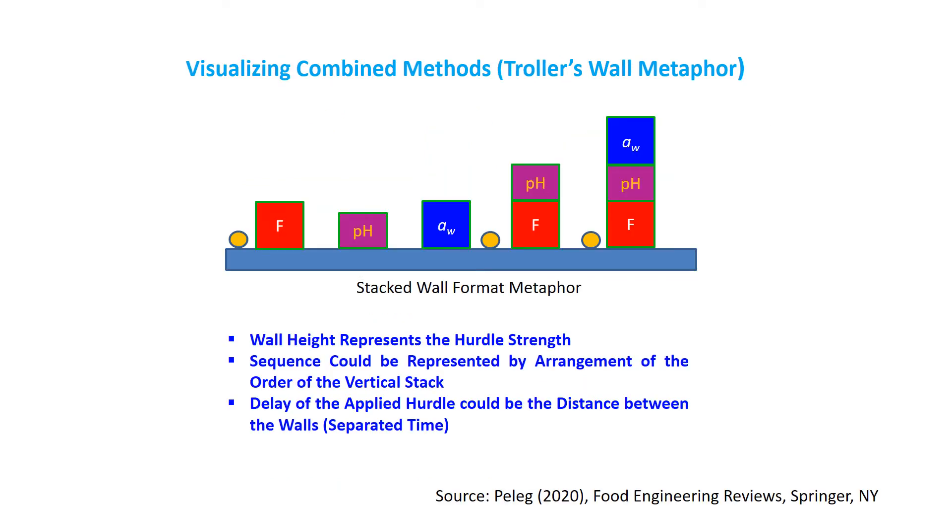Recently, Professor Peleg has proposed a stacked wall metaphor based on the idea of Dr. Leistner. In this case, the wall represents the hurdles and their height can represent strength. Sequence of hurdles could be represented by the order of the walls. The delay of the applied hurdles could be the distance between the walls, that is separated time. In this diagram, F value, pH, water activity are the hurdles. Combined, two or three hurdles, the hurdles are shown in the vertical stack of walls. On the right side, microbes can jump over the hurdles when applied individually or over two hurdles, but unable to jump three hurdles in combination.